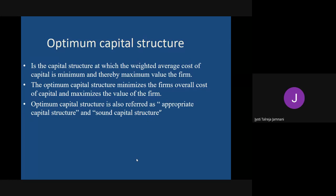If shareholders vote against a decision, you cannot take it. If you have 100 percent equity, whoever holds the maximum shares will eventually take your position. So people don't go for 100 percent equity because they want to retain power. Full borrowing is also bad because if you cannot repay, the bank will sell your company. So you cannot have 100 percent equity or 100 percent debt - you need a combination.